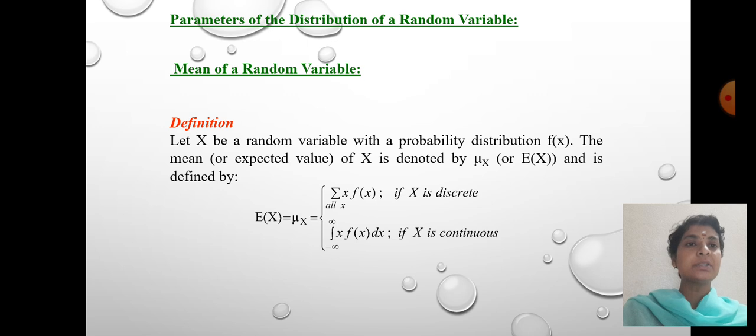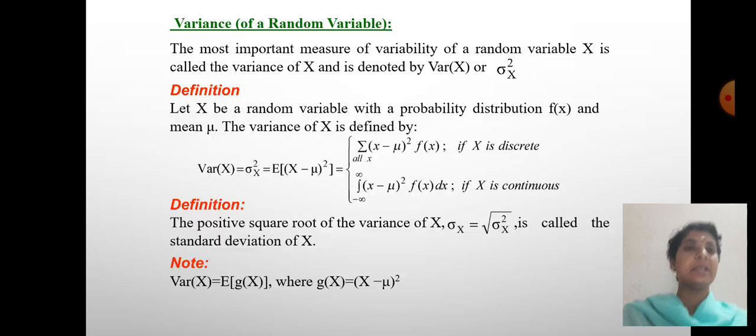Parameters of the distribution of random variable. Mean of a random variable: Let X be the random variable with the probability distribution f(x). The mean of X is denoted by μx and is denoted by E(X) = μx = sum of x·f(x) if X is discrete. If X is continuous, integral from minus infinity to plus infinity of x·f(x)dx.